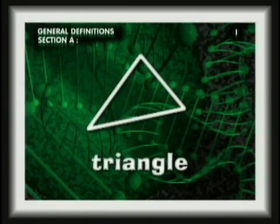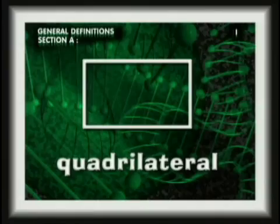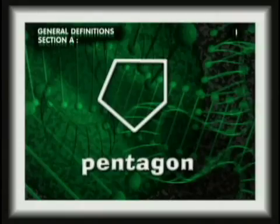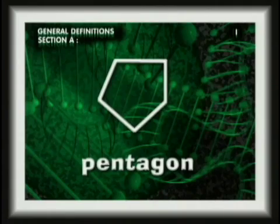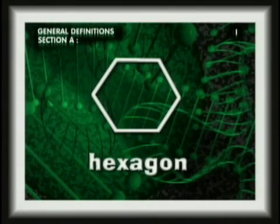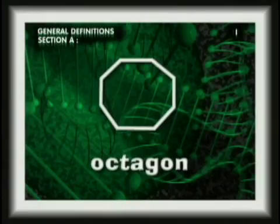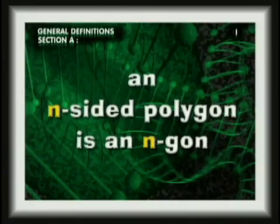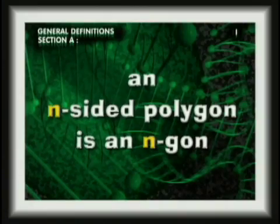A three-sided polygon is a triangle. A four-sided polygon is a quadrilateral. A five-sided polygon is a pentagon. A six-sided polygon is a hexagon. An eight-sided polygon is an octagon. An N-sided polygon is an N-gon.